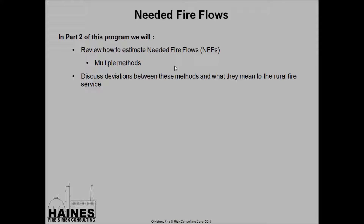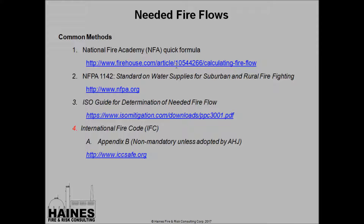In Part 2 of the program, we're going to discuss multiple methods for estimating your needed fire flows, where the needed fire flow is the recommended flow capacity in GPM and the flow duration in minutes or hours, recommended for structural firefighting based on the type and size of structure. I'm going to focus on the four most common methods: the National Fire Academy Quick Formula, NFPA 1142, the Insurance Services Office Guide for Determination of Needed Fire Flow, and the International Fire Code Appendix B.